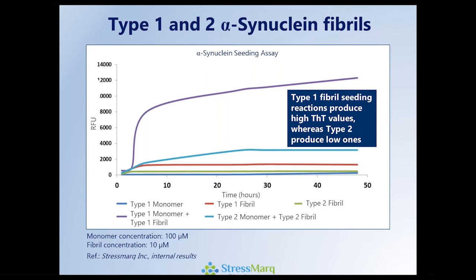In this typical seeded alpha-synuclein reaction, we see the purple line, very similar to what we looked at in terms of aggregation kinetics. This is the result of a type 1 seeded assay — type 1 monomer with type 1 fibril — giving a large THT response. However, if we do exactly the same thing under the same conditions with the same concentrations using a type 2 fibril seeded reaction, the signal in light blue is about four to five times less. Type 3 fibrils are essentially a merge between type 1 and type 2 in terms of properties.